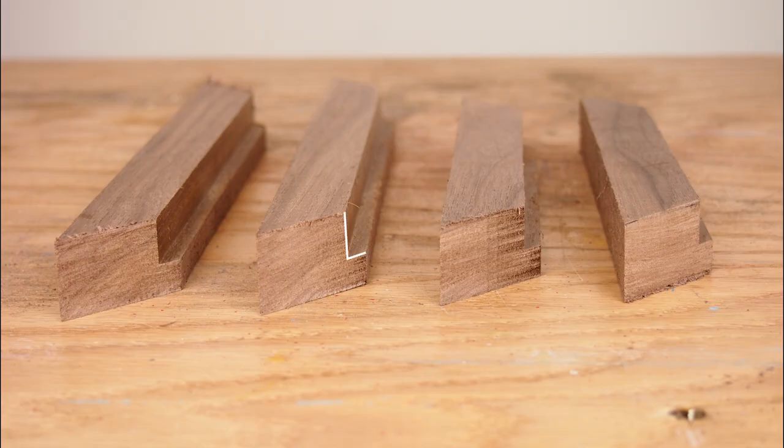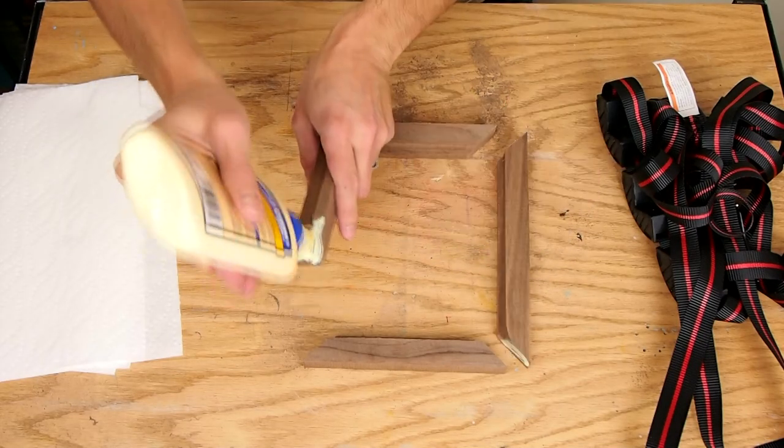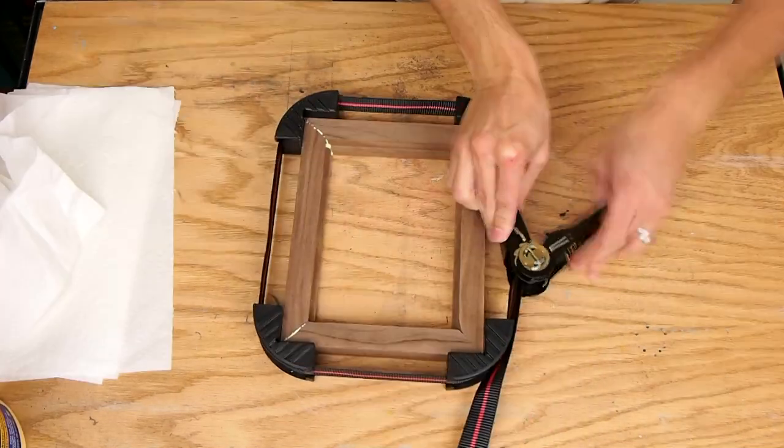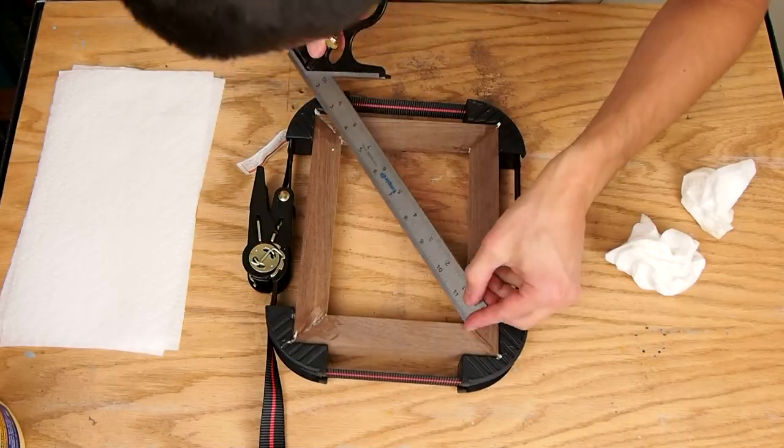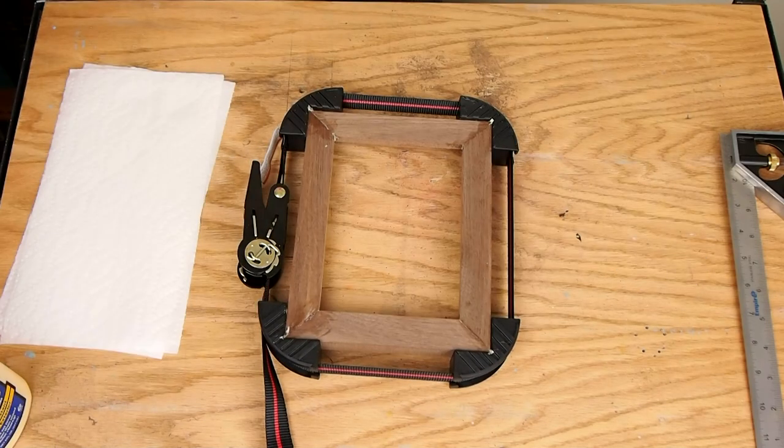The notch I cut measures 1 and a half inch by 3 and 1/16 inch. Then I glued the pieces together and clamped them with this handy belt clamp I have. I measured the diagonals to make sure they were the same and that the frame was square. I let the glue dry overnight.